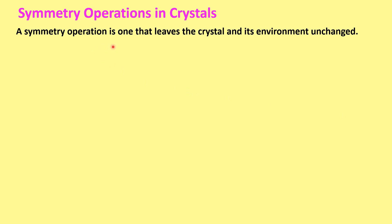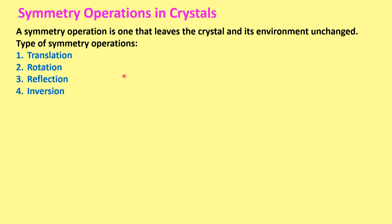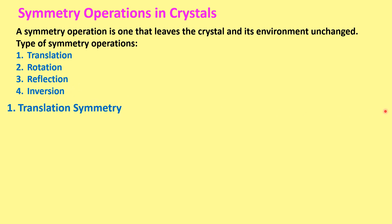A symmetry operation is one that leaves the crystal and its environment unchanged. There are 4 types of symmetry operations: translational, rotational, reflection, and inversion.